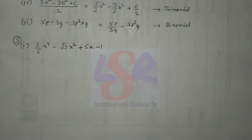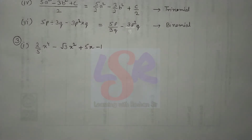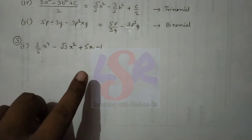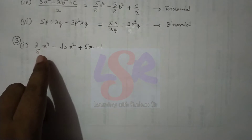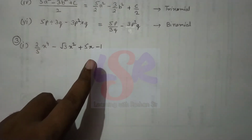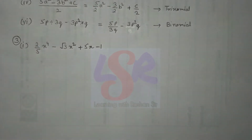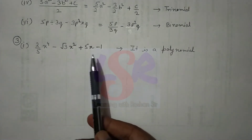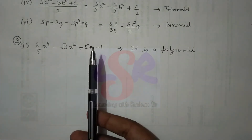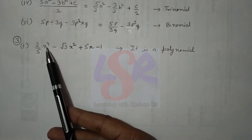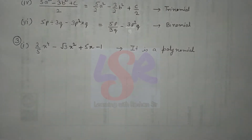In question 3, we have to identify whether an expression is a polynomial and, if so, identify its degree. In a polynomial, the power of variables can never be negative — it should always be positive. In the first part, the powers are 4, 2, and 1, so it is a polynomial. The highest power is 4, so the degree is 4.